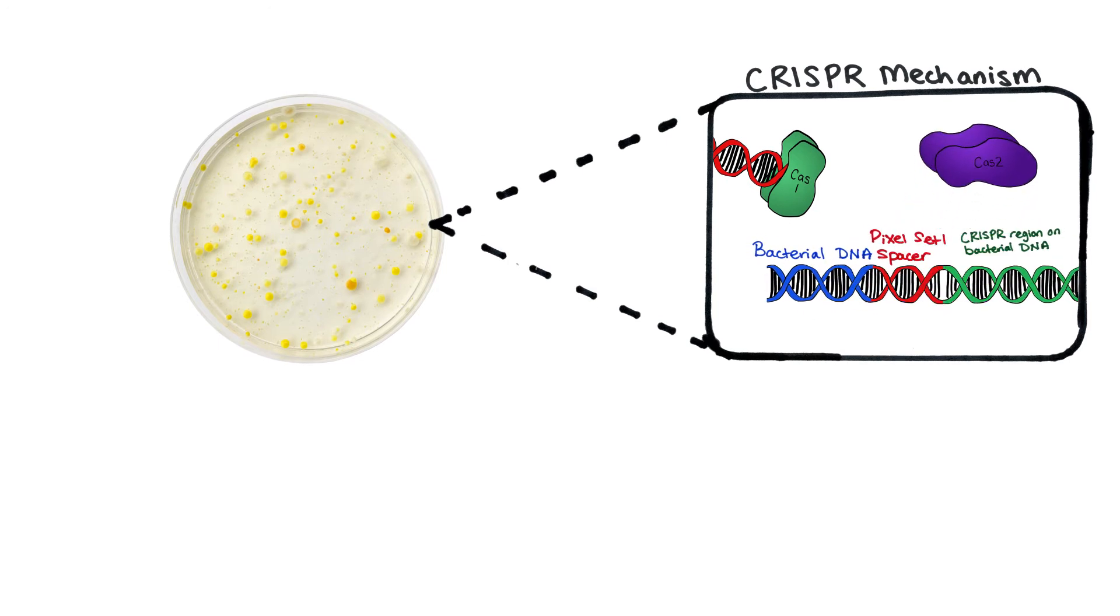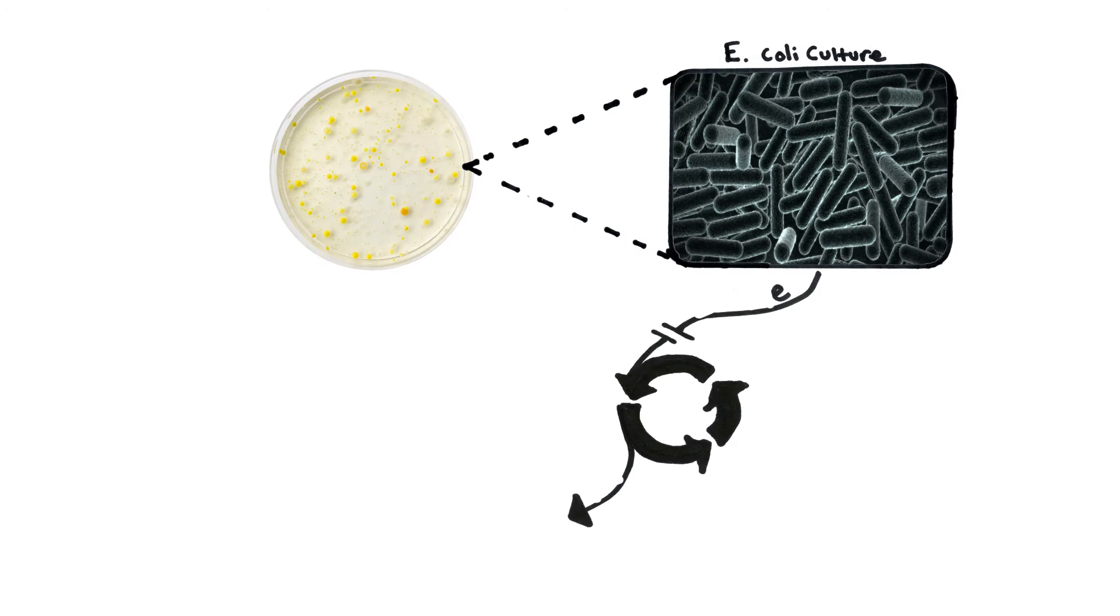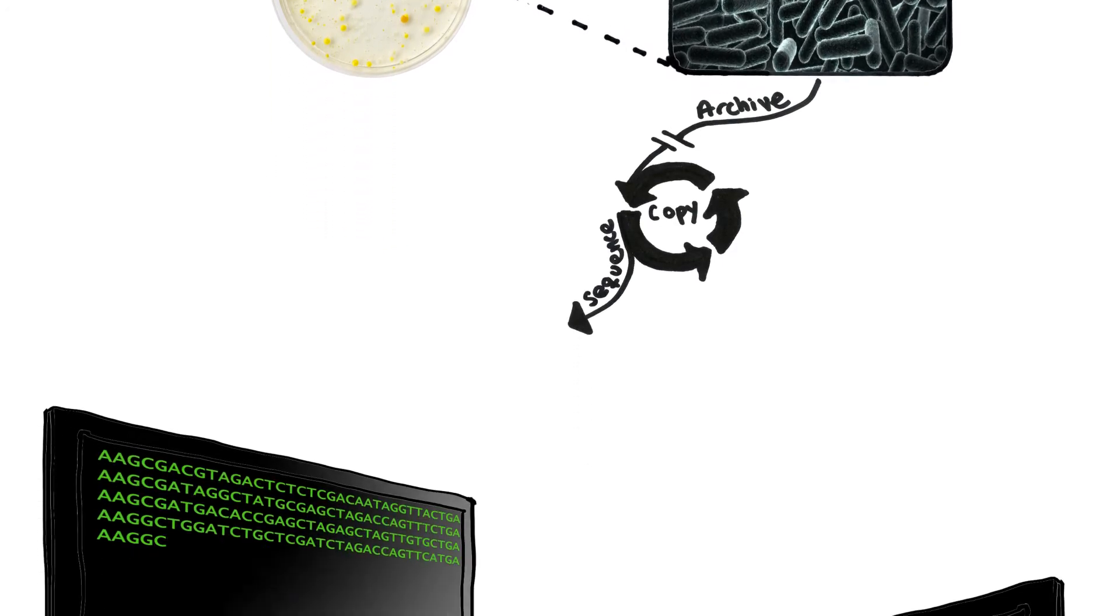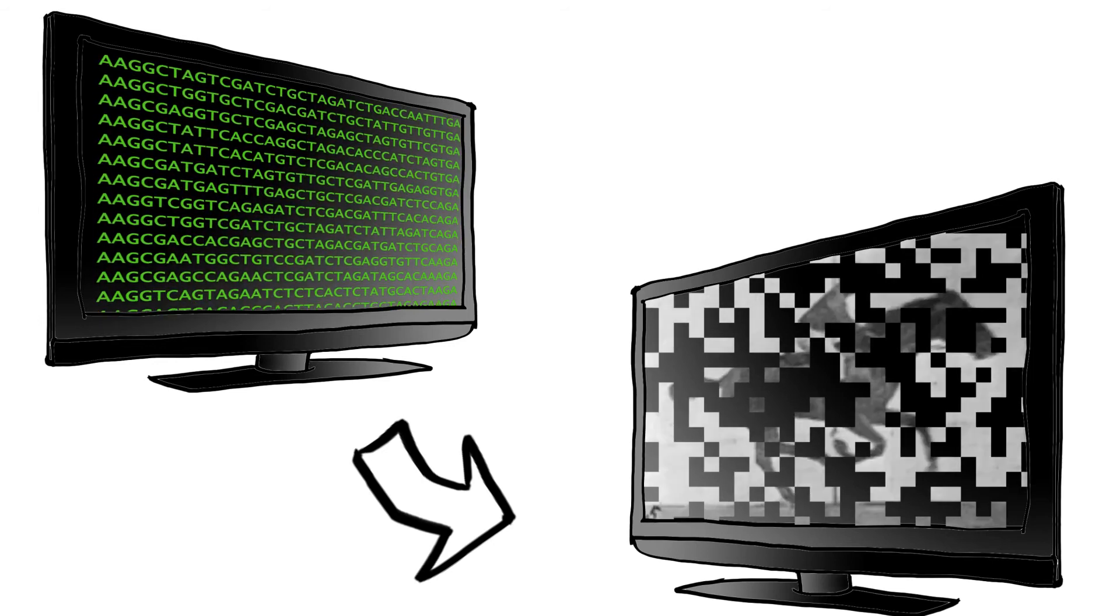And then finally, once they're in the array, in order, we can then take a population of cells that have had this experience. We get their genomes out and sequence them, and we just sequence that one locus, the CRISPR array, and from that, we can reconstruct the information that we actually put in.